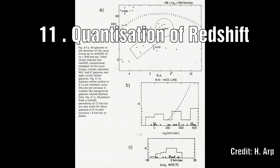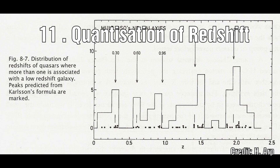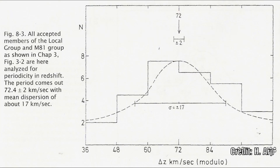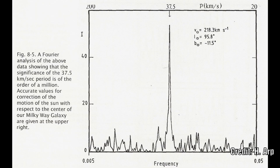Number 11: Both galaxies and quasars show a quantization of redshift in steps of 72 km/s and 37.5 km/s.